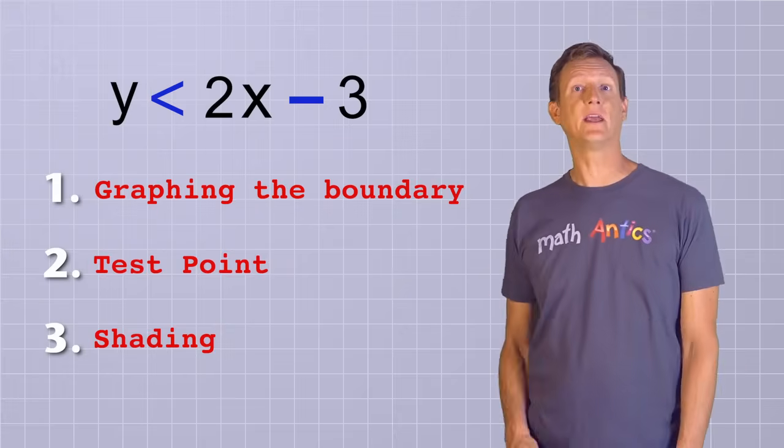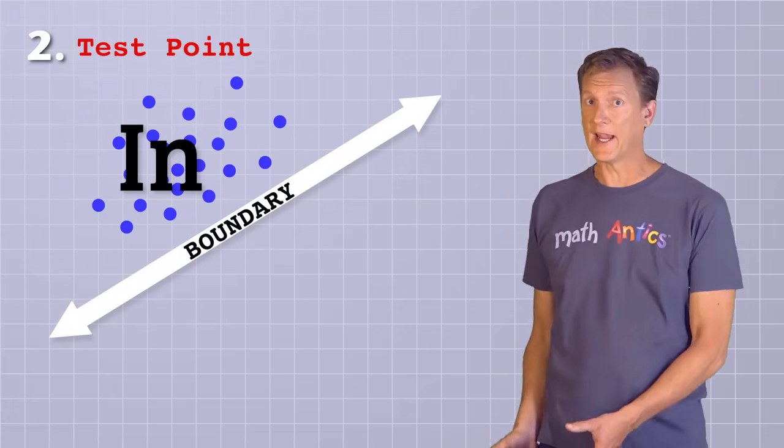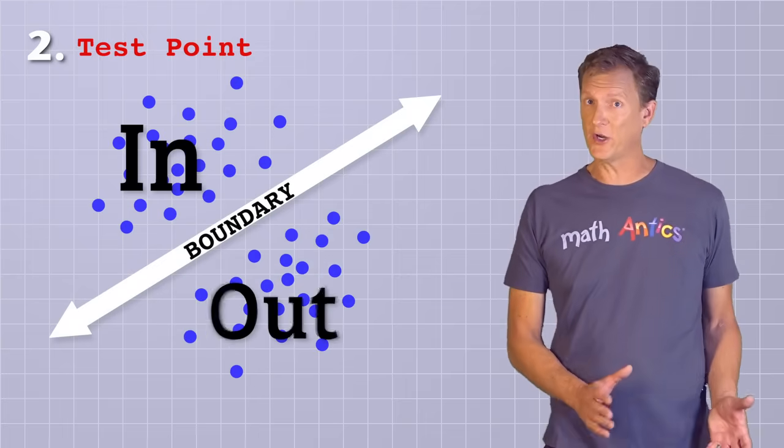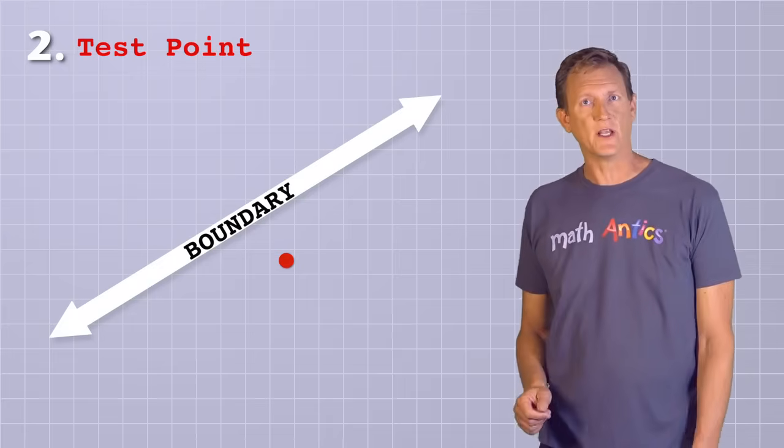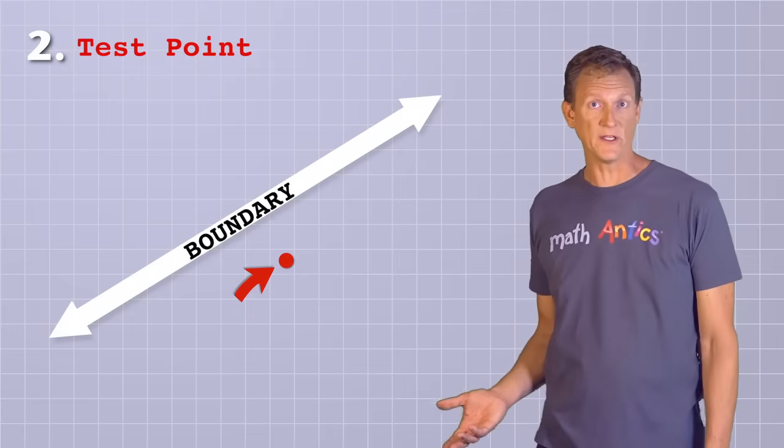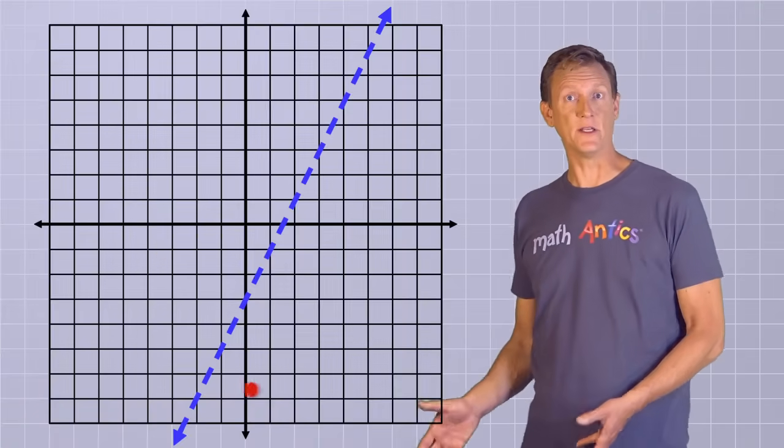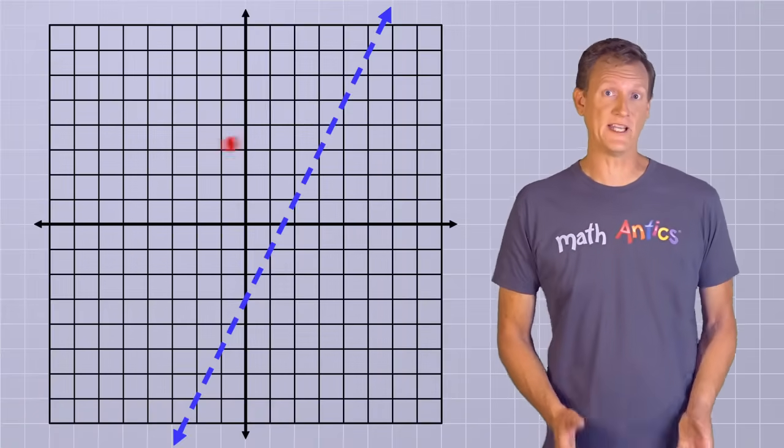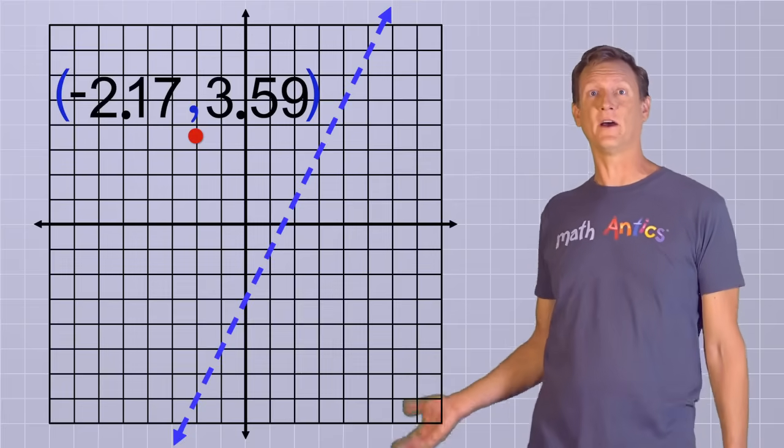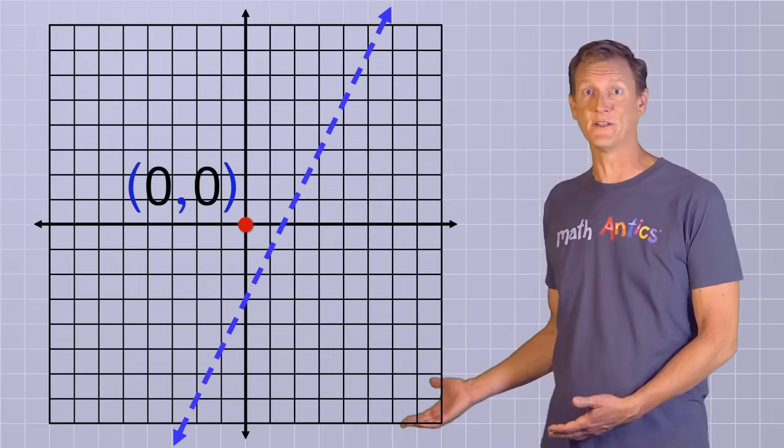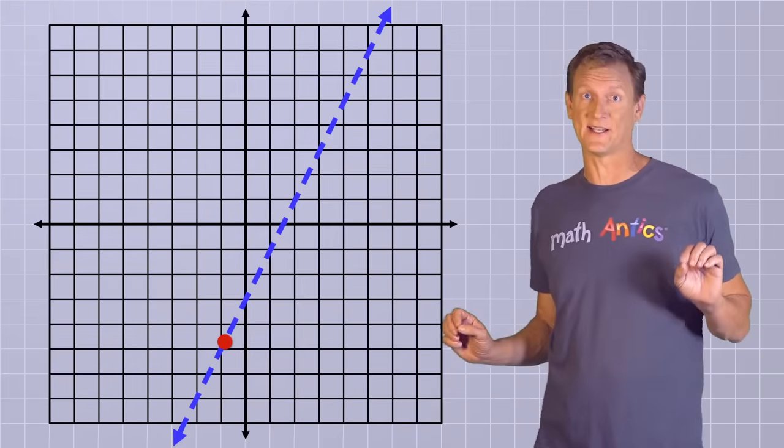Great! Now that we have our boundary line correct, we need to figure out which side of the line is in the answer set. To do that, we need to pick a test point. Because we know that all of the points on one side of the line are in the answer set, and all of the points on the other side are not, we only need to know the status of one point to tell which side is which. In other words, if we can determine whether the test point is in or out, we'll know if that entire side is in or out. It doesn't matter where the test point is, so feel free to pick something really easy to work with. I mean, why pick something like... when you can just pick... or.